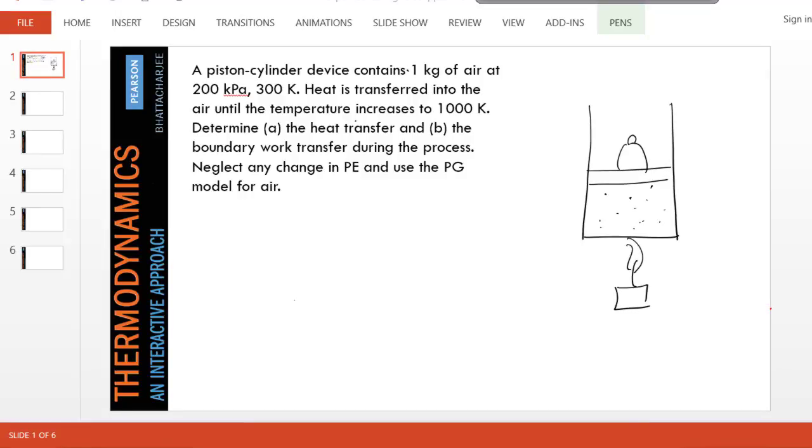This is another closed process. In this process, air is being heated from a given temperature of 300 Kelvin to a high temperature of 1000 Kelvin, and we are asked to find the heat transfer and the boundary work involved. The initial pressure is 200 kPa.